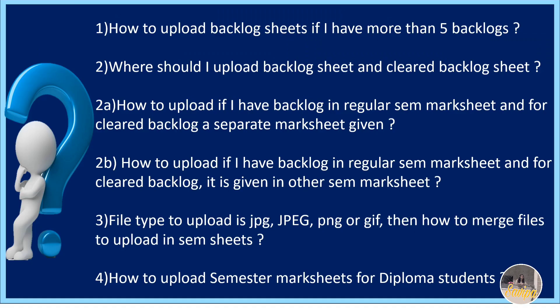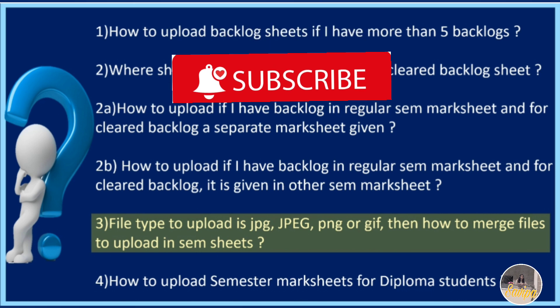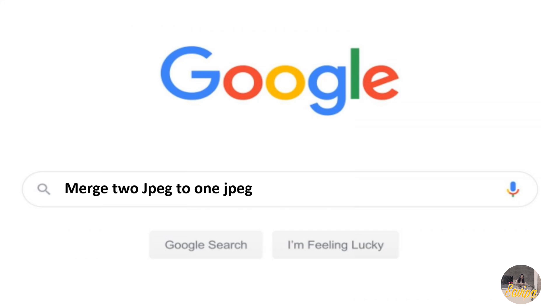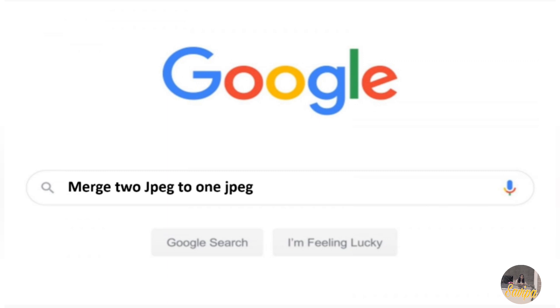The file type to upload is JPG, JPEG, PNG, or GIF. So how do you merge files to upload in SEM sheets? I have told you many times to merge, but you may wonder the merged file becomes a PDF. So here is a solution candidates have shared. Go to your Google search bar and type: 'Merge 2 JPG to 1 JPG'. There is a website that currently works for this — I am not recommending it as an ad, it's just what I found working.